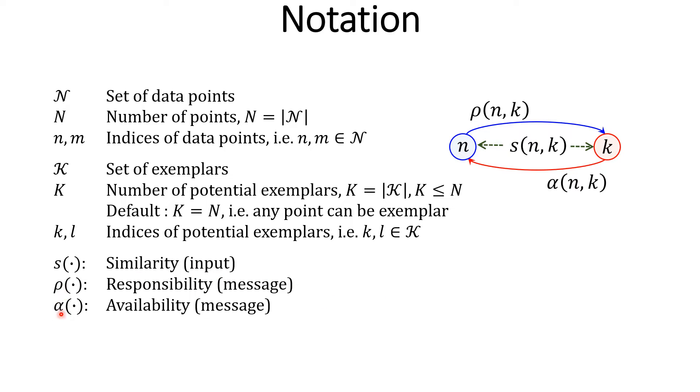Now there are two kinds of messages. Rho_nk is the message sent by data point n to the potential exemplar k.